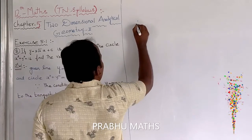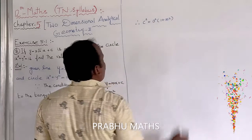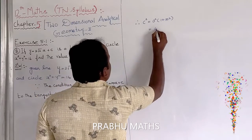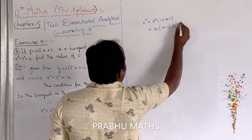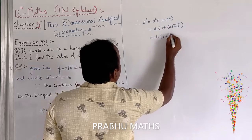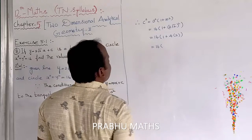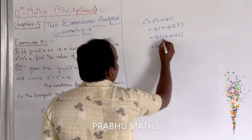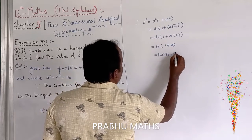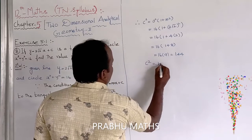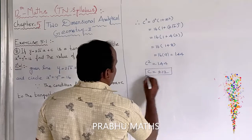Applying the formula c² = a²(1 + m²): c² = 16 × (1 + (2√2)²) = 16 × (1 + 8) = 16 × 9 = 144. Therefore c² = 144, so c = ±12. That is the value of c.